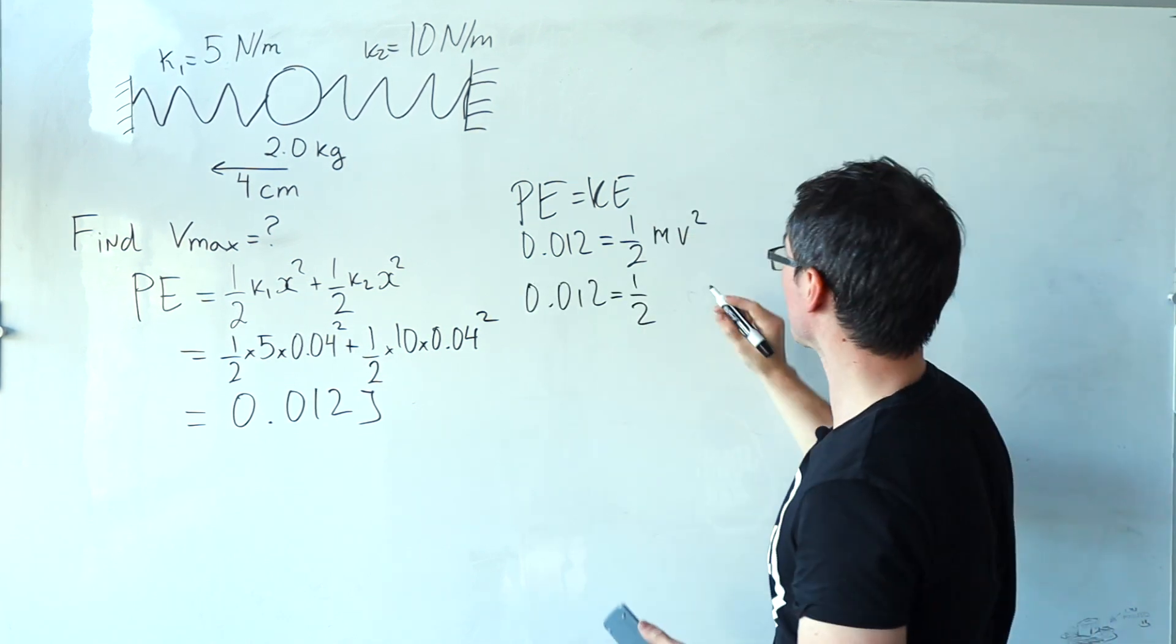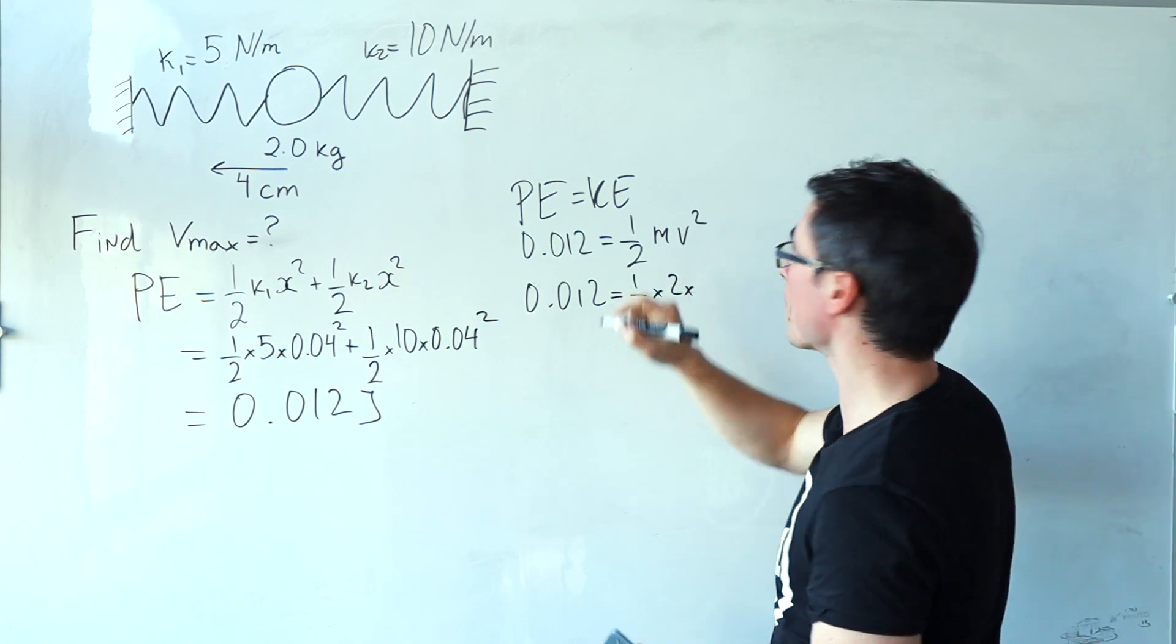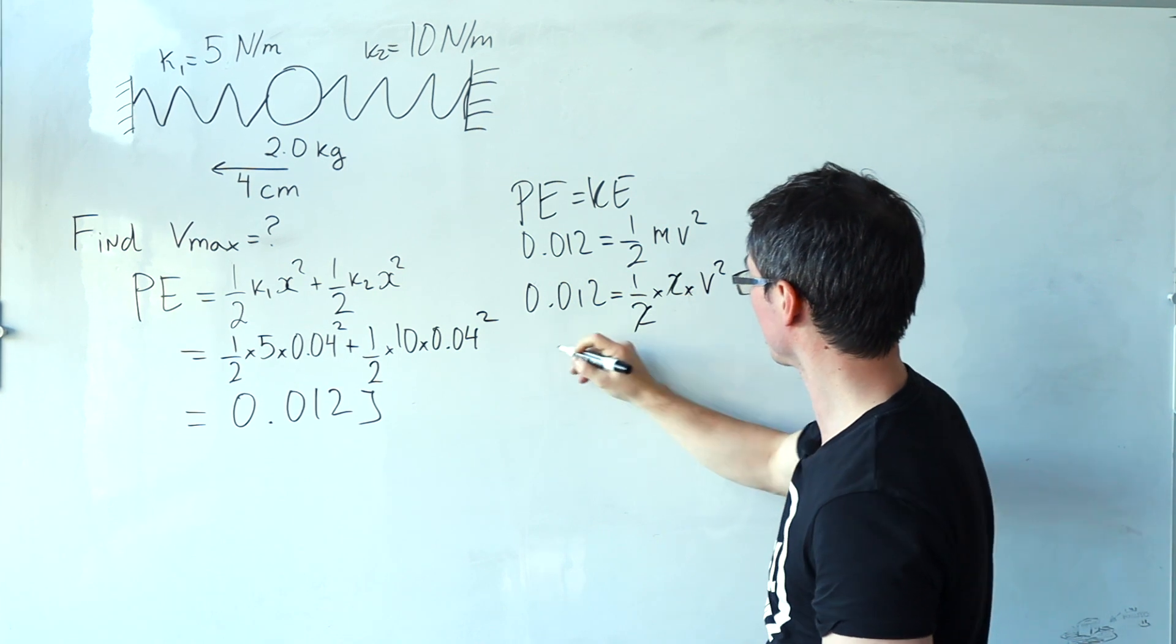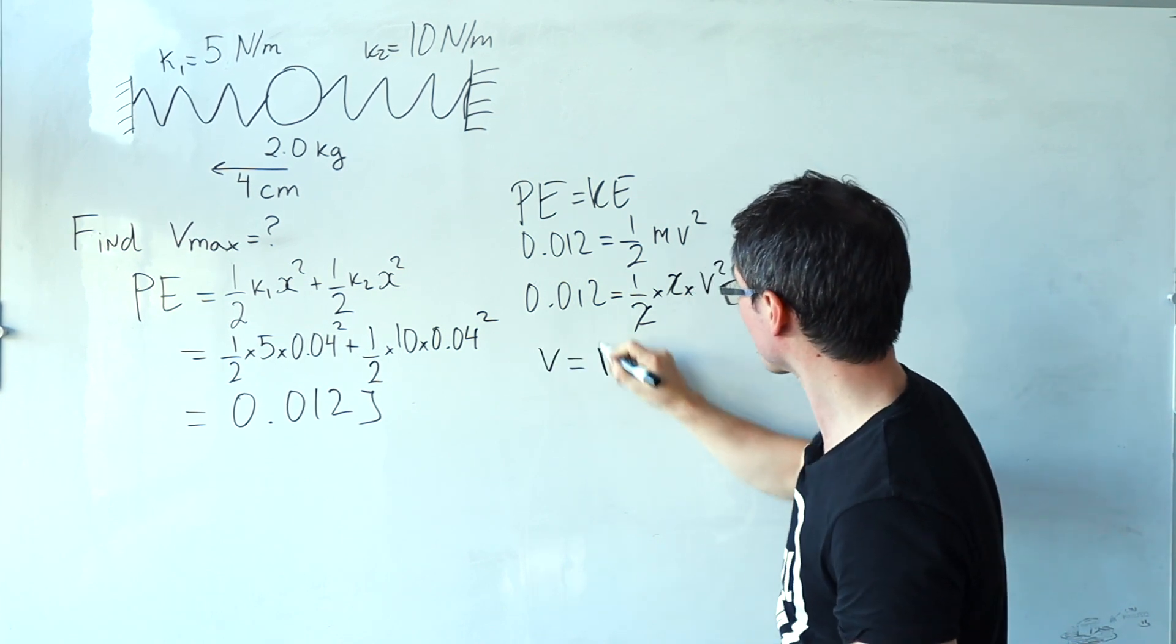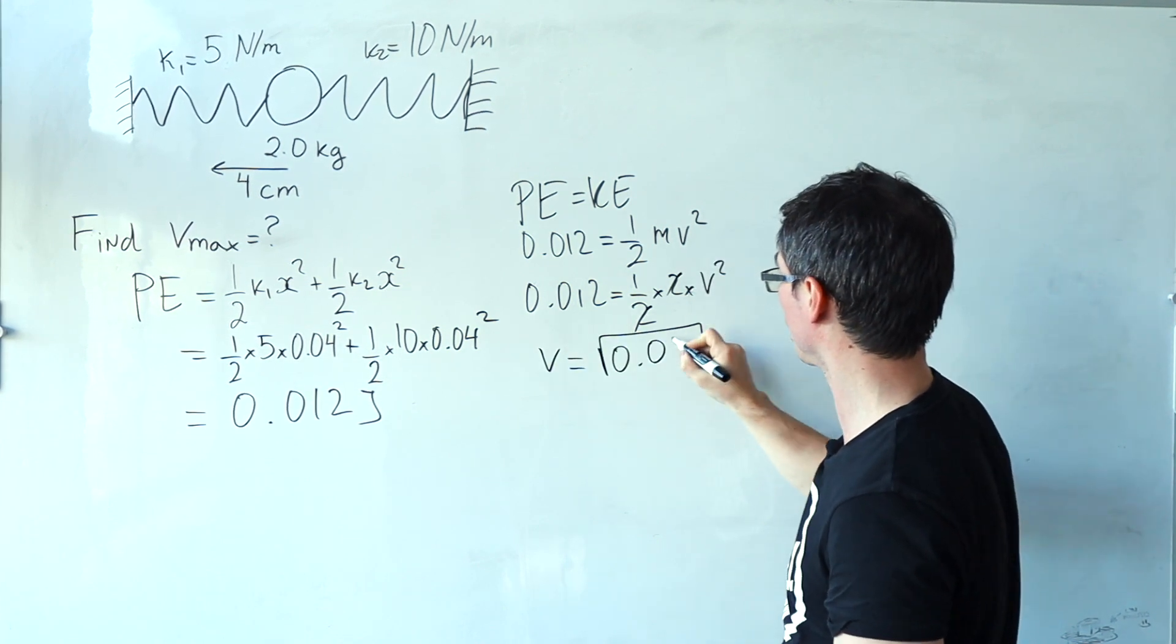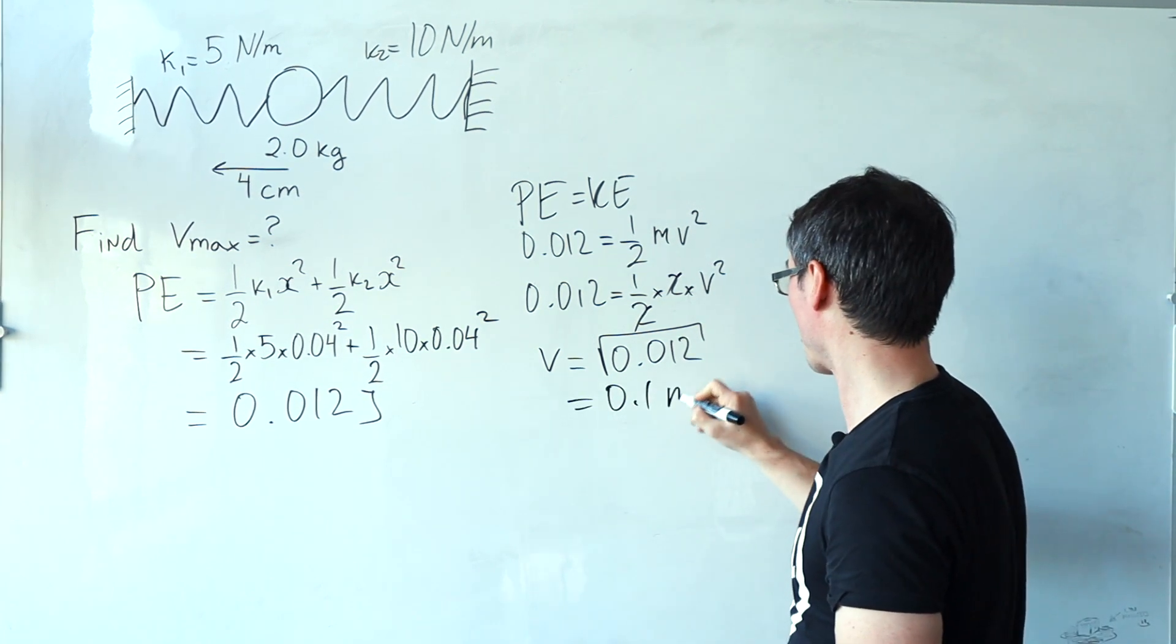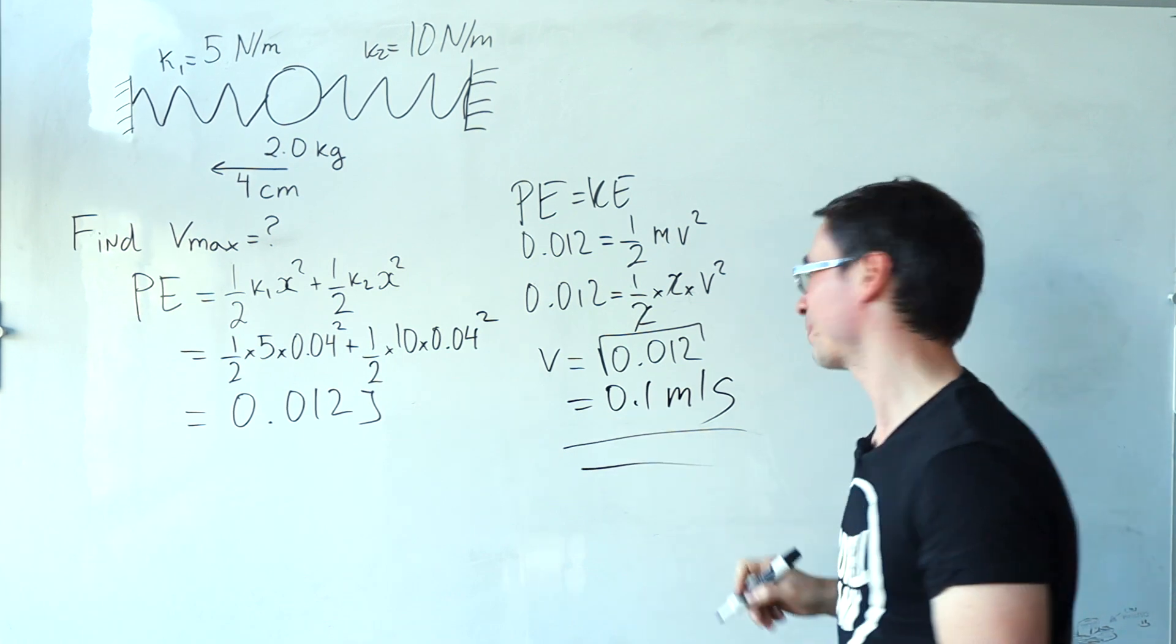Now, the mass is just two kilograms multiplied by the speed squared. Those two will cancel. So therefore, the maximum speed will just be given by the square root of this number. And that's going to give me around 0.1 meters per second.